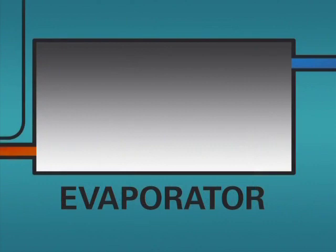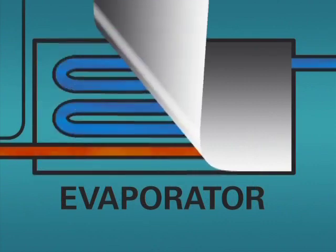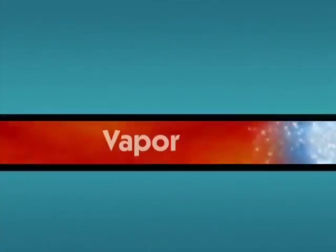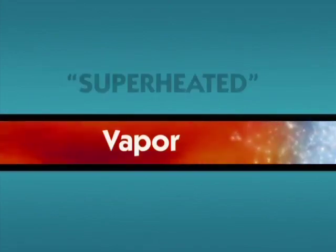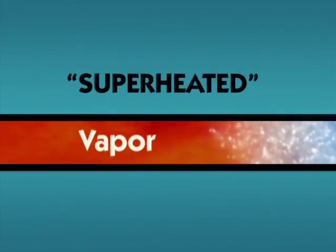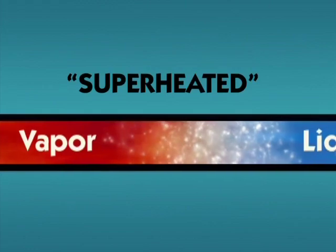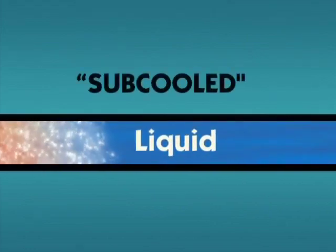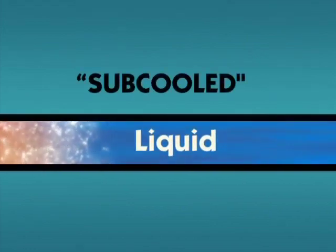Saturated refrigerant can be 100% vapor, a mixture of liquid and vapor, or 100% liquid. At temperatures above saturation, the refrigerant becomes superheated vapor. At temperatures below saturation, the refrigerant becomes subcooled liquid.